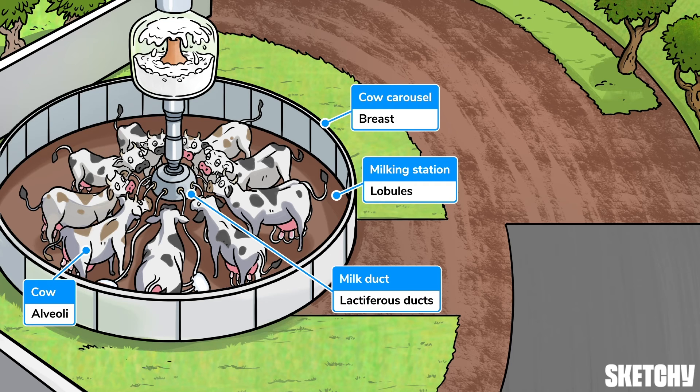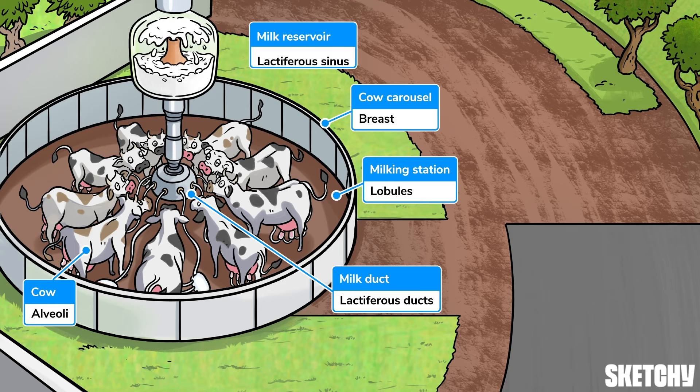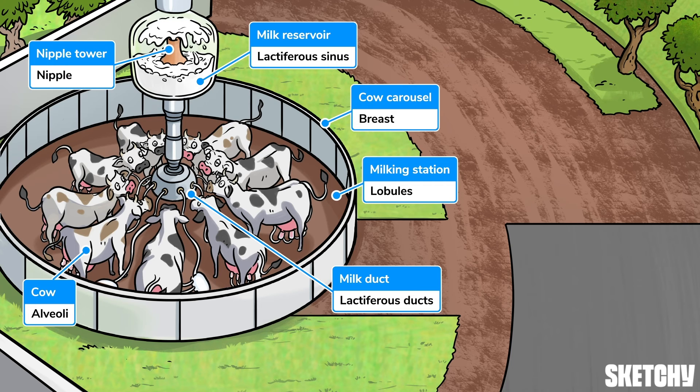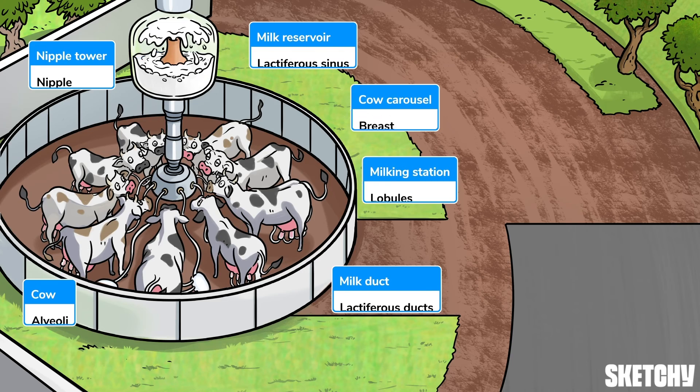The milk moves from the cows to these tubes, representing the lactiferous ducts. These tubes then converge, collecting milk in a reservoir, similar to a lactiferous sinus. And finally, the milk passes through that nipple-shaped tower, which is self-explanatory.